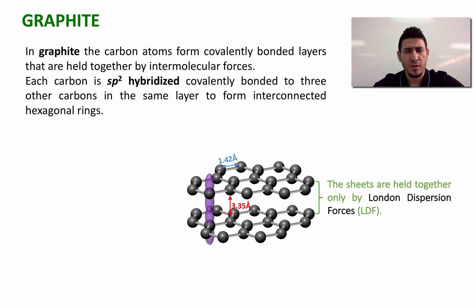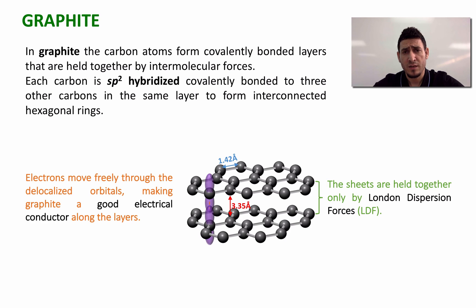The p orbital on the carbon atom will overlap with another p orbital from a carbon atom from a different layer to form a pi bond. The free electrons will be able to move from one layer to another, and this is what makes graphite a good electrical conductor.